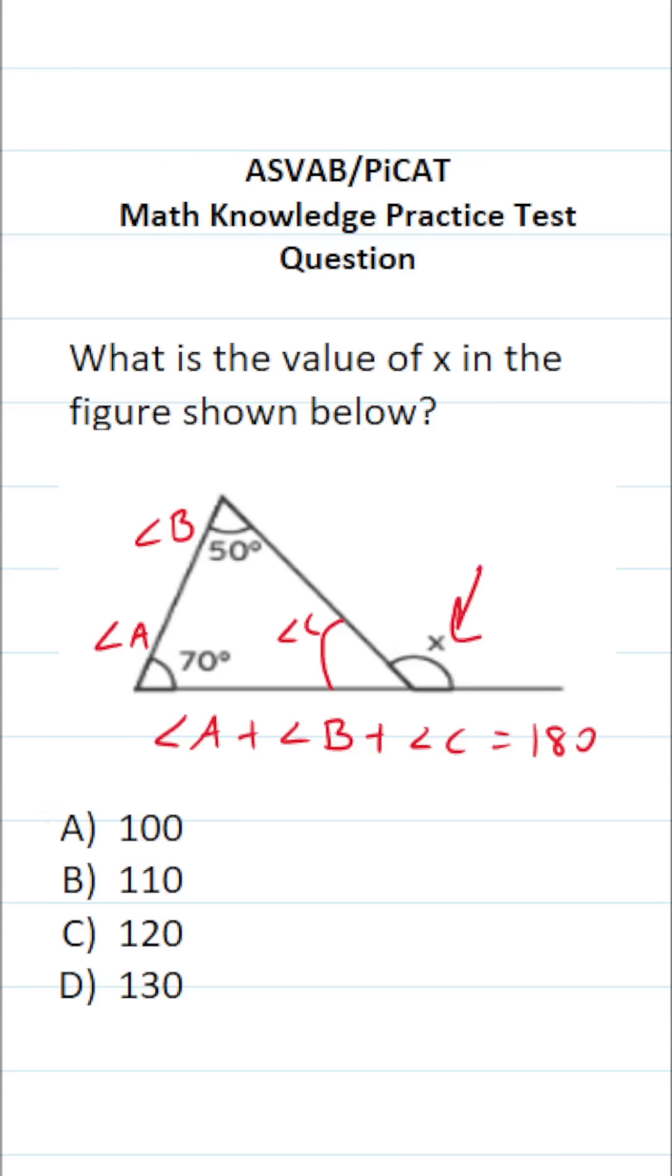So let's go ahead and solve for the measure of angle C. This becomes 70 plus 50 plus the measure of angle C, which is what we're trying to determine, equals 180 degrees.